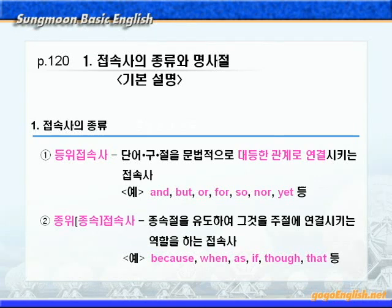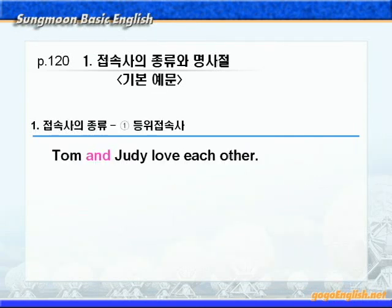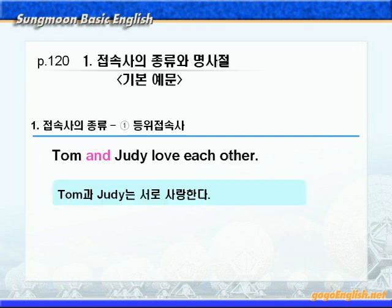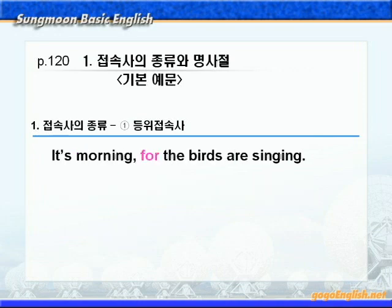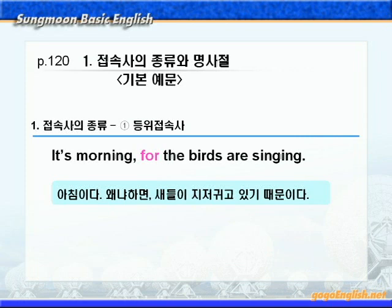등위접속사를 설명하는 1번부터 보겠습니다. 'Tom and Judy love each other.' 해석하면 Tom과 Judy는 서로 사랑한다 이런 뜻이죠. and는 Tom과 Judy라는 두 단어를 대등하게 연결시키고 있으니까 등위접속사죠. 다음 예문에서 'It's morning, for the birds are singing.' 새들이 지저귀고 있기 때문에 아침이다 이런 뜻이죠. 접속사 for는 두 절을 대등하게 연결시켜주고 있으니까 역시 등위접속사죠.